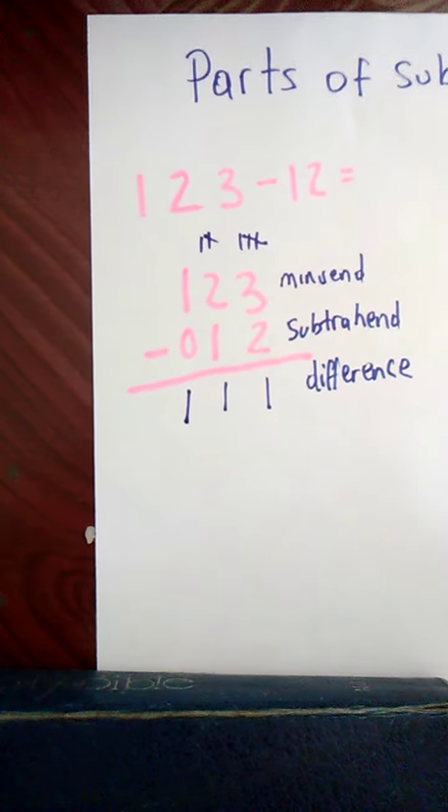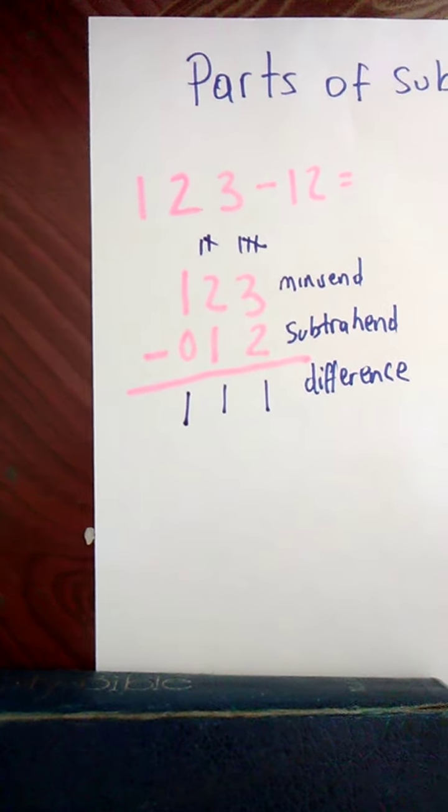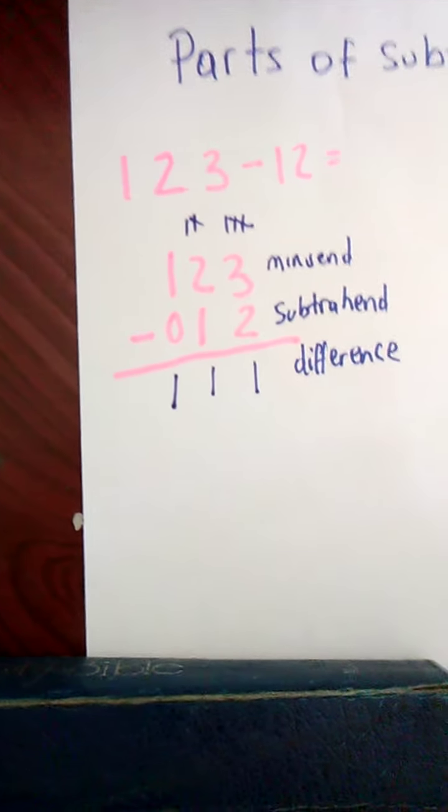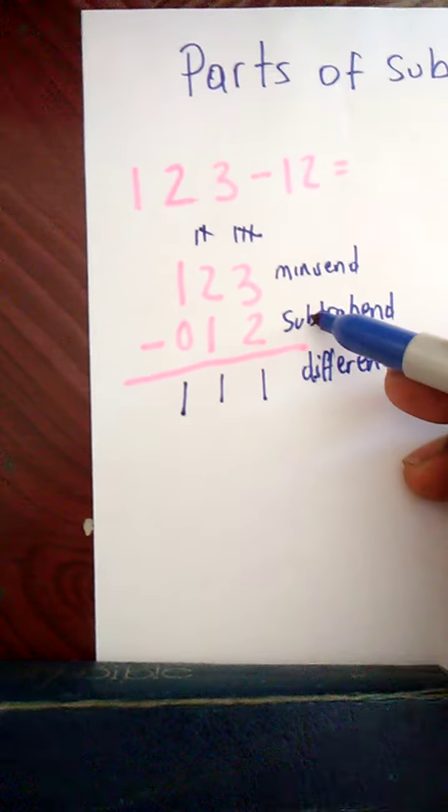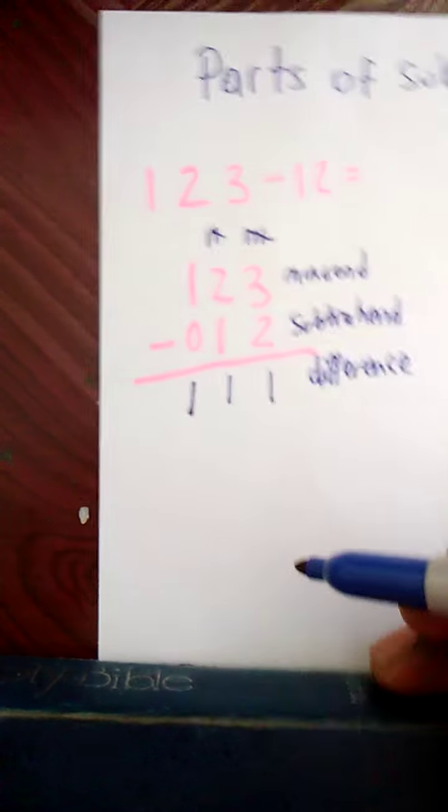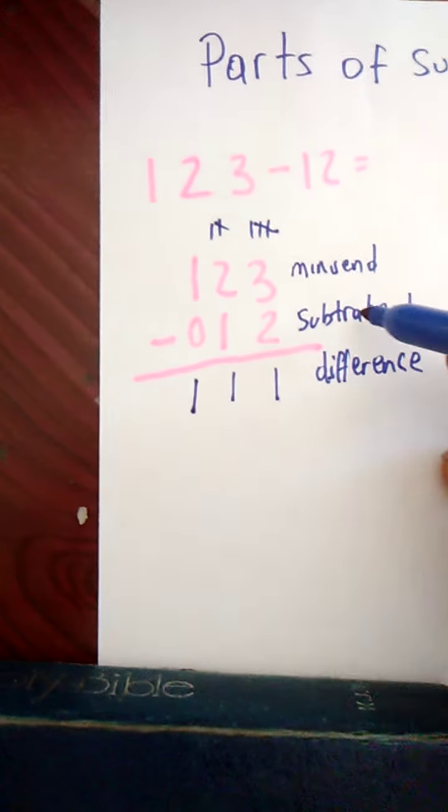Any number, 0 from any number is going to give you the same number. And if you want to prove that you're correct, you can add your difference and your subtrahend. Anytime you want to prove if you're correct, you can add the difference and the subtrahend.